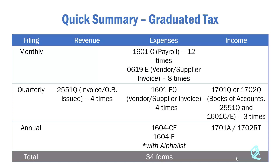Forms 1701Q and 1702Q are filed three times a year. For annual filing, you have Forms 1604CF and 1604E. The BIR requires you to also submit these returns with the so-called alpha list. For 1604CF, the alpha list is the alphabetical list of your employees — a summary for employees that can be easily generated from your payroll.